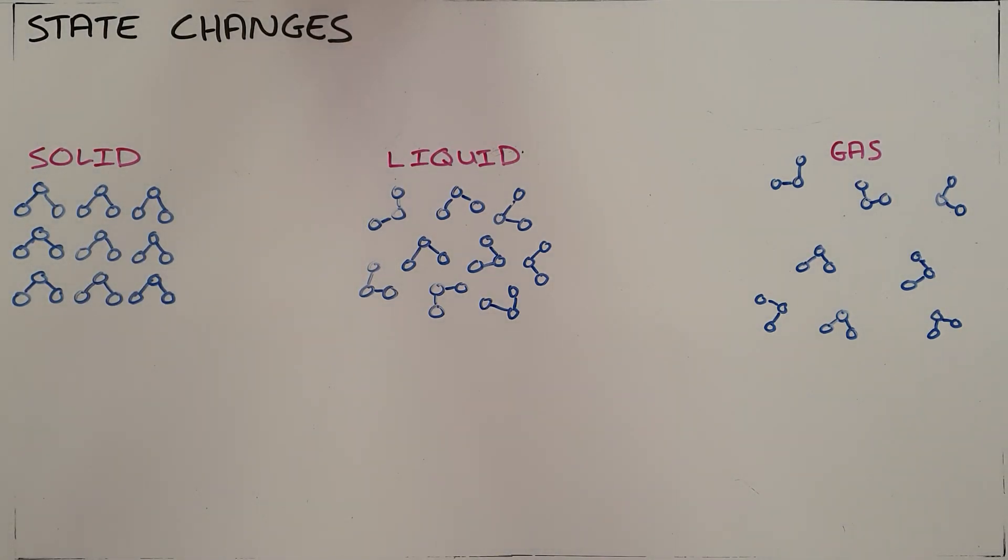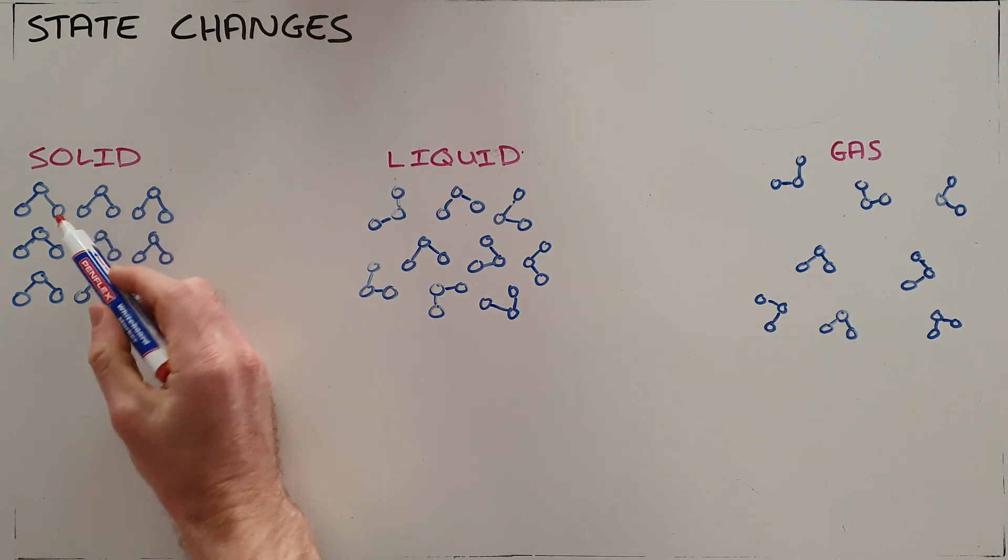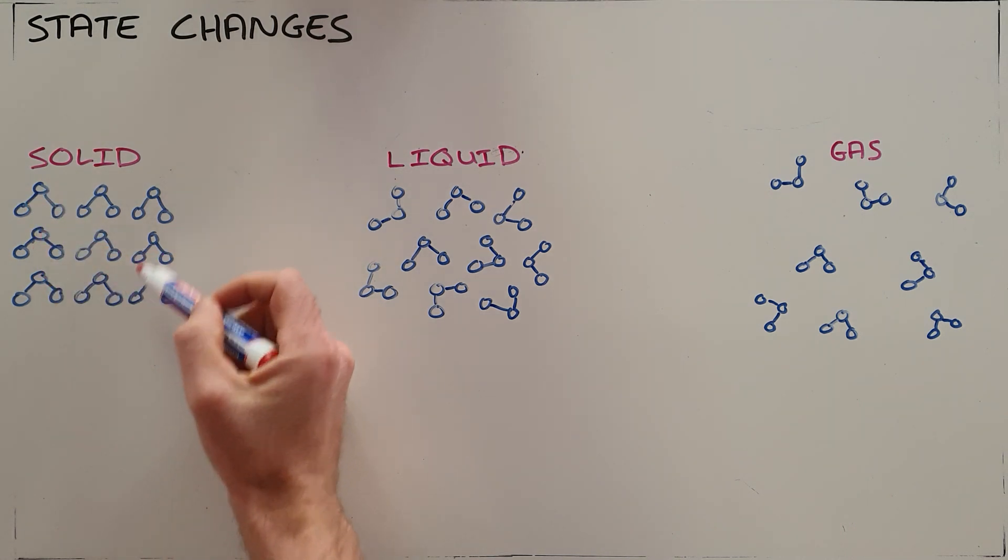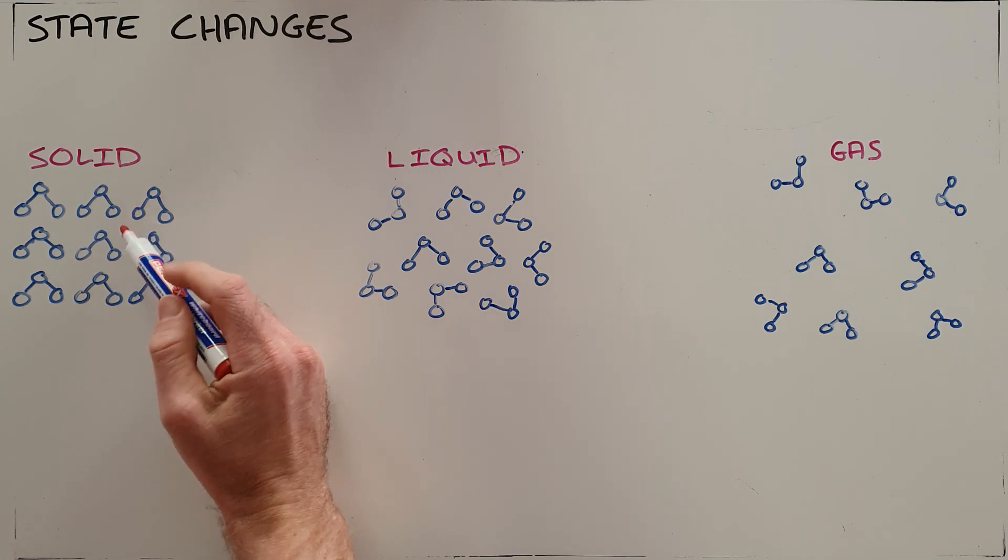We know from the particle model of matter that there are three main states or phases in which matter occurs, and those are the solid state where particles are neatly arranged and packed in an orderly arrangement and fairly close together.